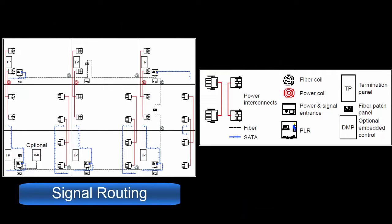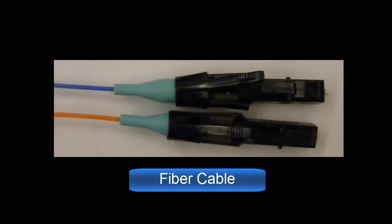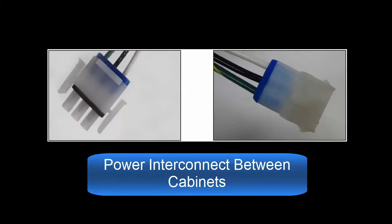First, route the fiber cable through the signal entrance then terminate. Connect the fiber cable to the first fiber patch panel. Refer to the contract specific signal interconnect drawing and system riser diagram. Next, route the coiled power cables from section to section connecting to the power harness in the next section. Refer to the contract specific system riser diagram.